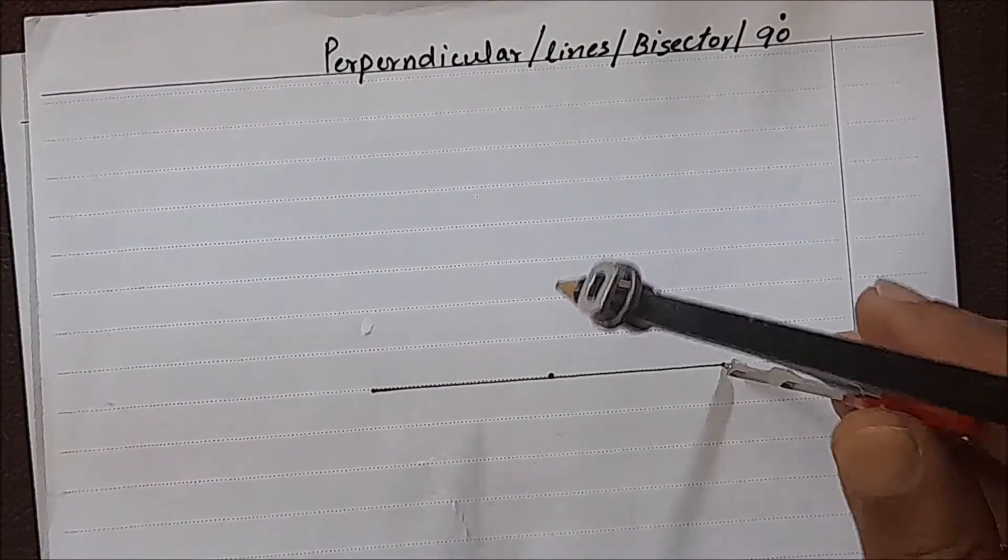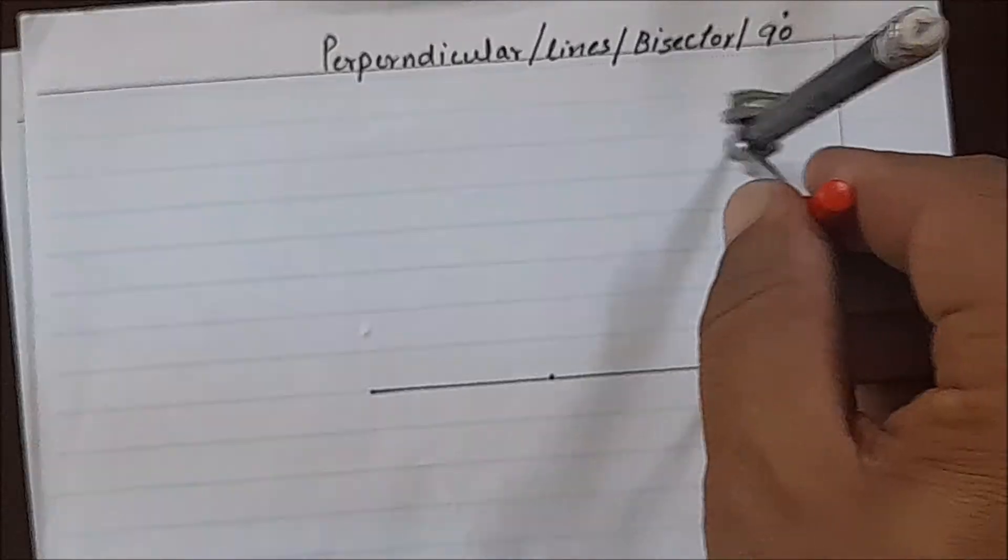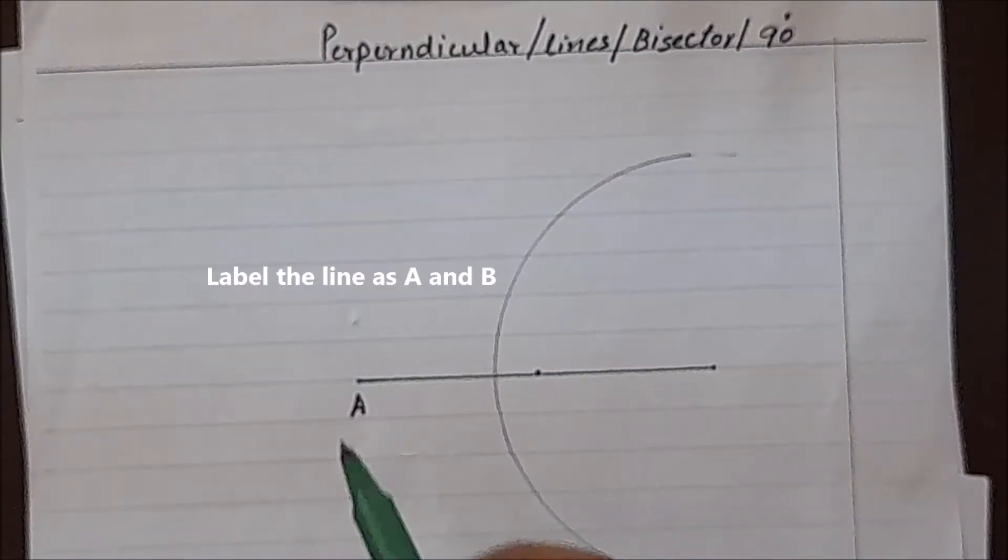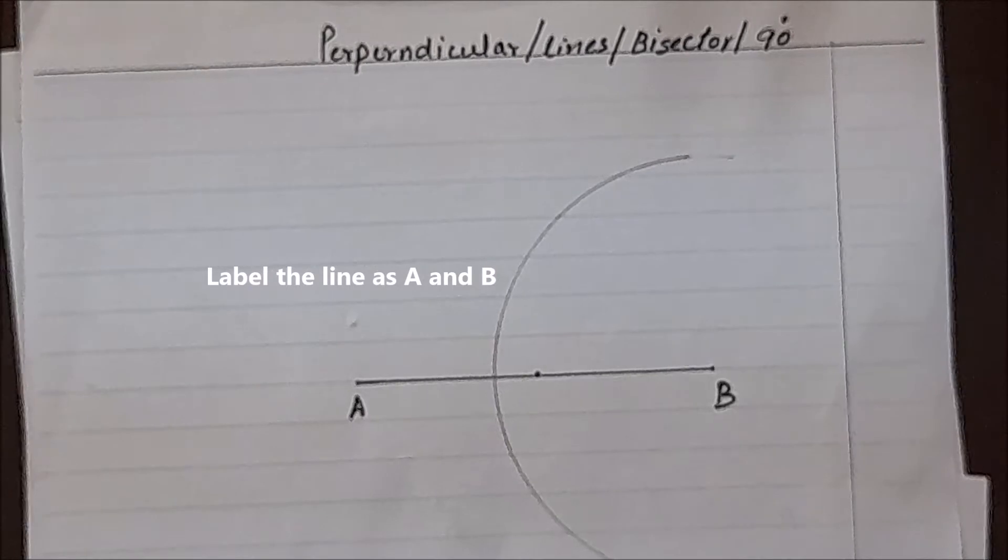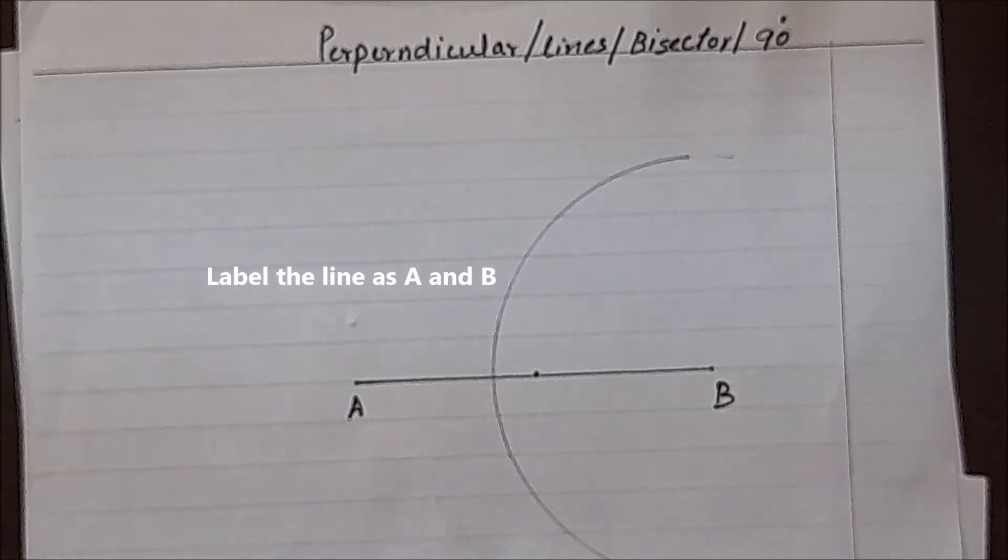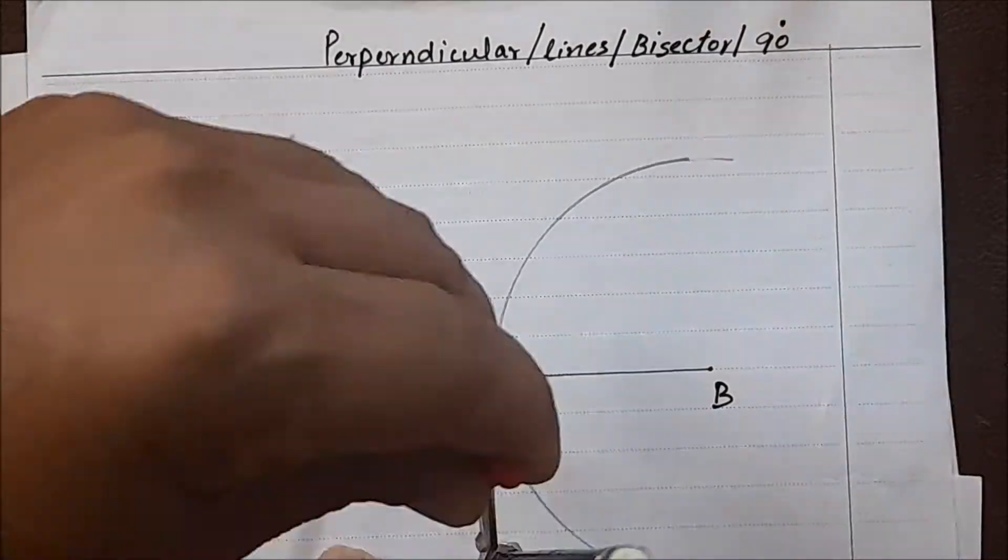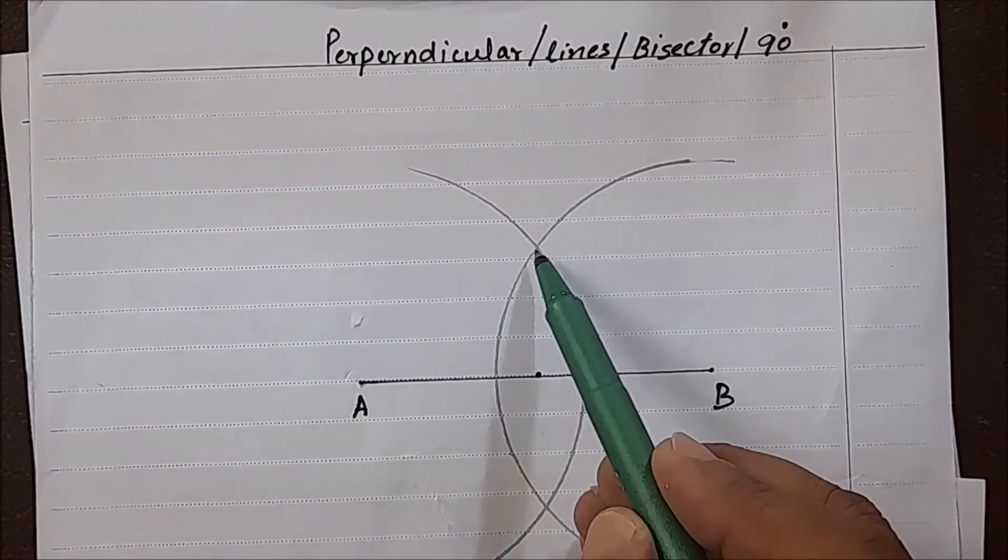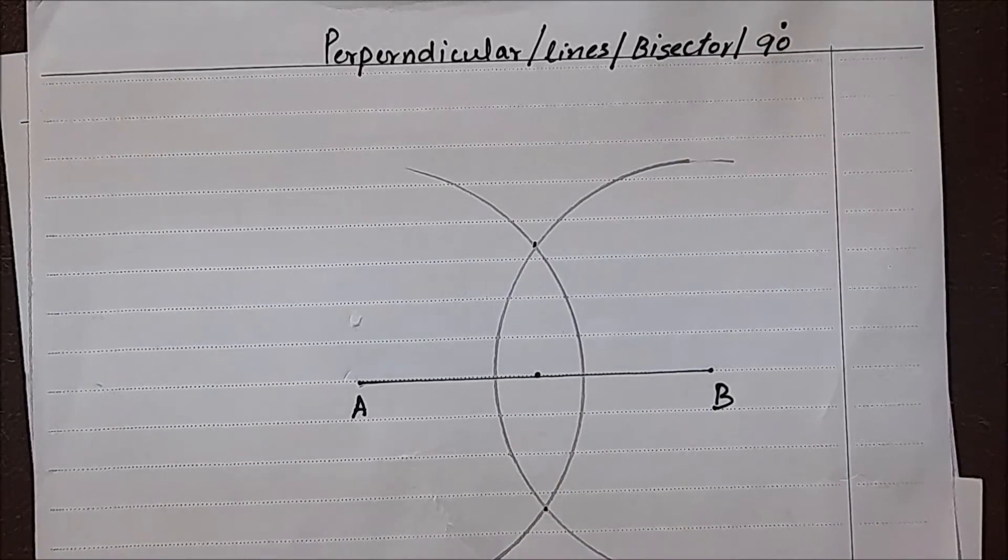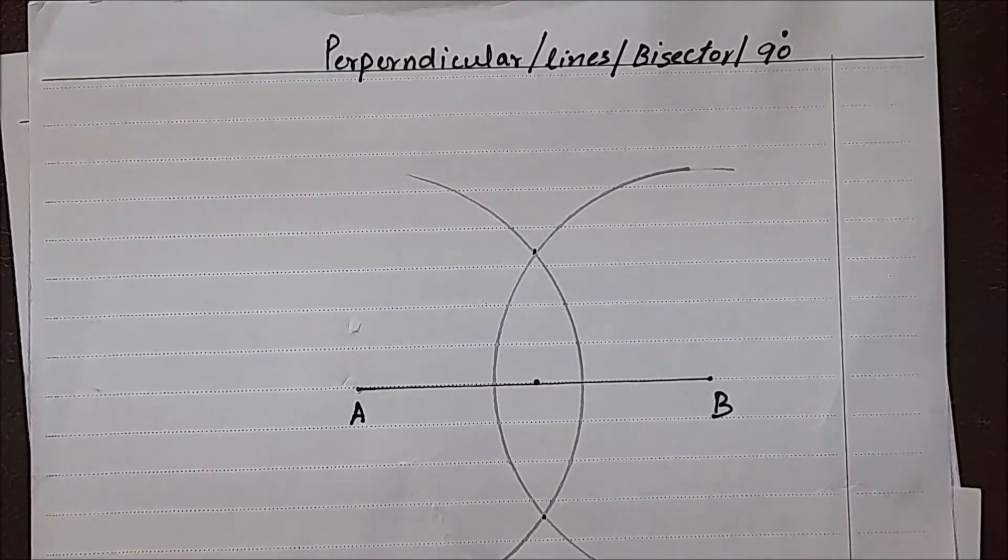Then we will draw a semicircle here. This is A, this is B. Now I'll draw from A. We get one arc here and one here. With the help of our ruler, we will join them.